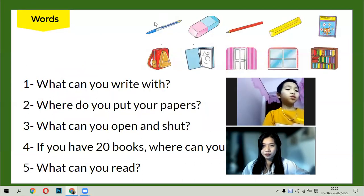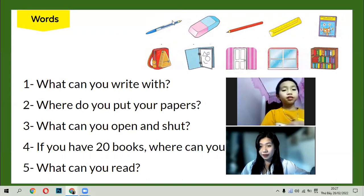Now, Ken, what can you write with? I can write with a—what's this? Pen. I can write with a pen. Pen and pencil. Pencil, pencil. Now, where do you put your papers? In the folder. Folder. What can you open and shut? It's a door. Door and window. Window. If you have 20 books, where can you put them? In the bookcase. Bookcase. What can you read? A book. A book.